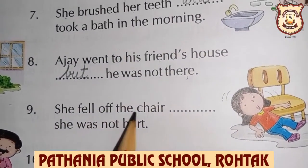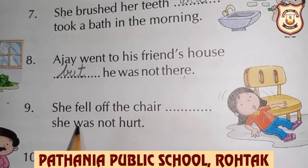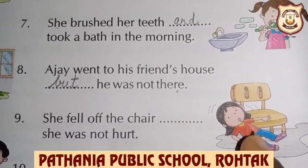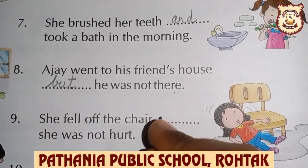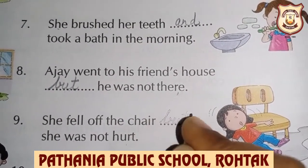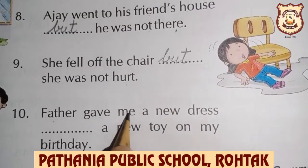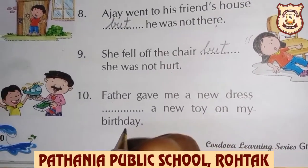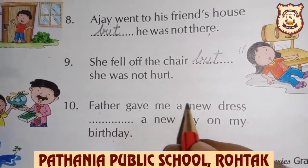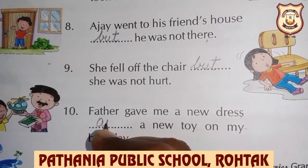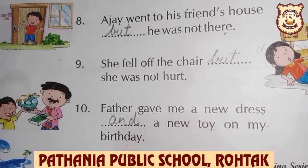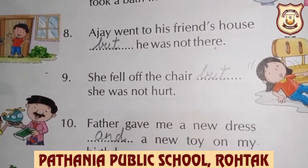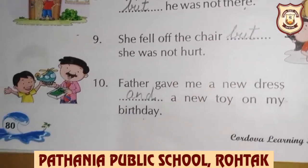'She fell off the chair, but she was not hurt.' — She fell off the chair but was not hurt. 'Father gave me a new dress and a new toy on my birthday.' This is question number B. You have to do question number A and B in your grammar book. Okay, bye, take care class.